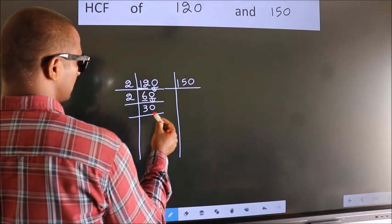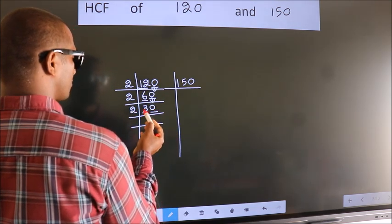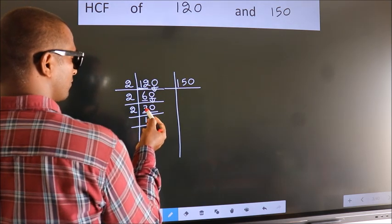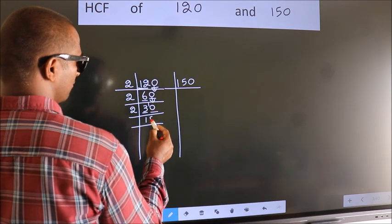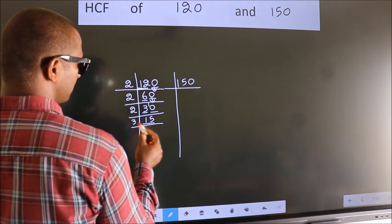Now, last digit 0, so take 2. First number 3, a number close to 3 in 2 table is 2, 1, 2. 3 minus 2, 1, 1 carried forward 10. When do we get 10 in 2 table? 2, 5 is 10. Now, 15 is 3, 5 is 15.